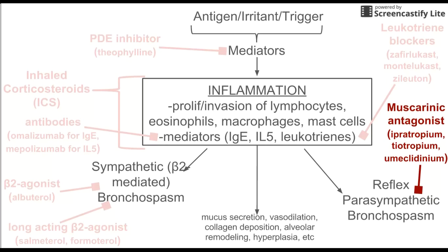Finally, there are the muscarinic antagonists. This class addresses reflex parasympathetic bronchospasm, which is activated by the parasympathetic nervous system using acetylcholine at muscarinic receptors on smooth muscles around the respiratory tract. Drugs like ipratropium or tiotropium block those muscarinic receptors and prevent the parasympathetic nervous system from causing bronchospasm. These are easy to remember because they all end with 'M', just like muscarinic.